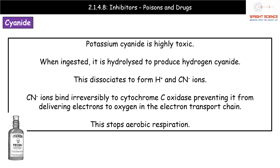This is going to be problematic in terms of aerobic respiration specifically, because cytochrome C oxidase is one of the enzymes involved in delivering electrons to oxygen during the electron transport chain. If we've prevented our cytochrome C oxidase from carrying out this electron delivery, we've shut down the electron transport chain. We're not going to be able to generate the ATP we need, and that means we won't have enough ATP to run all those other metabolic processes — bad news all round.